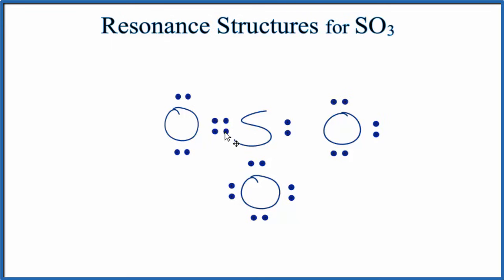There's even another one we could do. We could put these back here and then move these right here. Again we have eight valence electrons for this oxygen. Sulfur has eight. Everything has eight. So this would be yet another resonance structure. Those are the first three resonance structures for SO3.